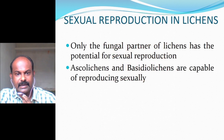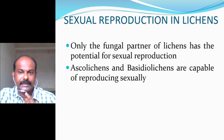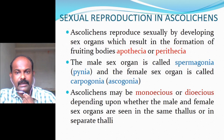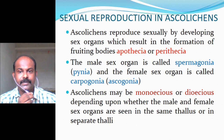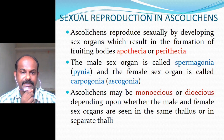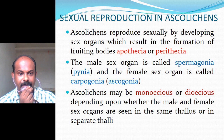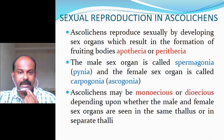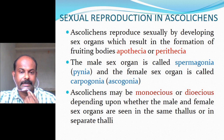In sexual reproduction in lichens, only the fungal partner has the potential for sexual reproduction. Ascolichens and basidiolichens are capable of reproducing sexually. In Ascolichens, sexual reproduction involves definite sex organs resulting in fruiting bodies like apothecia or perithecia. The male sex organ is called the spermogonium or pycnium, and the female sex organ is called the carpogonium or ascogonium. Ascolichens may be monoecious or dioecious depending on whether the male and female sex organs occur in the same or separate thalli.